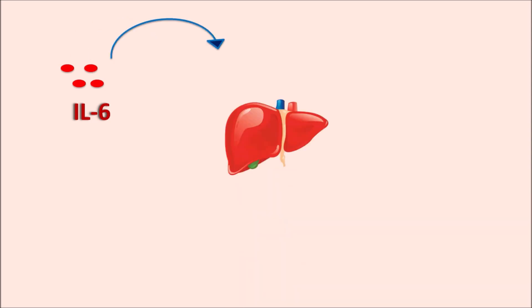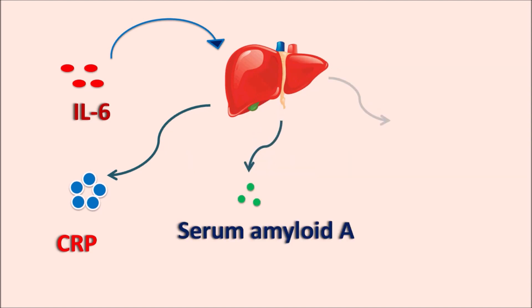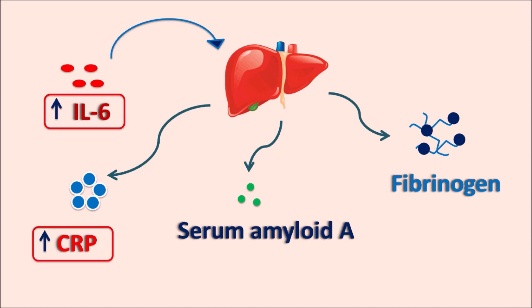The IL-6 released leads to the acute phase response. One of the primary targets of IL-6 is the hepatocytes of the liver. IL-6 stimulates the release of important mediators including CRP (C-reactive protein), serum amyloid A, and fibrinogen, which is responsible for the clotting process. In this way, IL-6 triggers release of inflammatory mediators responsible for the acute phase response. Whenever IL-6 levels are elevated, it is most often associated with elevated CRP levels — so IL-6 along with CRP can act as biomarkers for systemic inflammation.